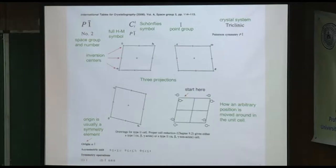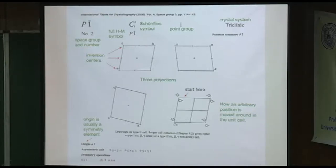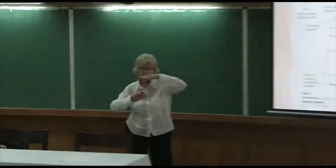These three sketches show where the symmetry operations occur with three different projections. The first projection is always down AC. Notice that these little circles are the inversion centers — you don't have to have it at the origin. These are all related by being at the edge, at the corner, but there's also one in the middle. Does it matter where you put your molecule? No. You can start with it here or here, and if your molecule has a center of inversion you might rather see it in the middle of the unit cell — just move it by a half, a half, a half.